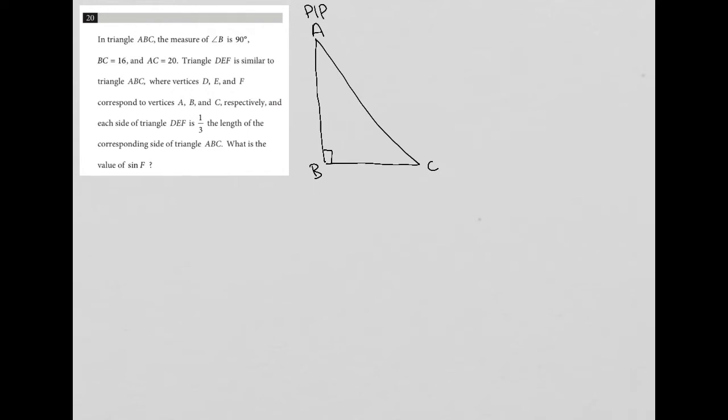Okay, so then we're also told that BC is 16. So labeling is part of our plug-in picture strategy. We want to draw, we want to label. So AC is 20. I'm going to fill this in now because usually the answer is not found in the given information. It's found in what you can find from the given information. So I'm going to do that up front. So 16 and 20 there, this has to be a 12. Here's why.